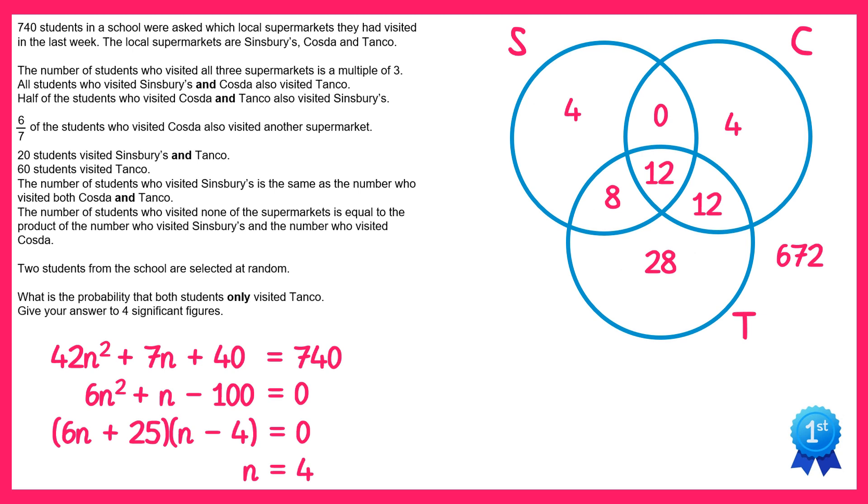We can now go and answer the question. The question says two students from the school are selected at random, and what's the probability they only visited Tanko. Now the section for only Tanko is this one here, so there's 28 students.